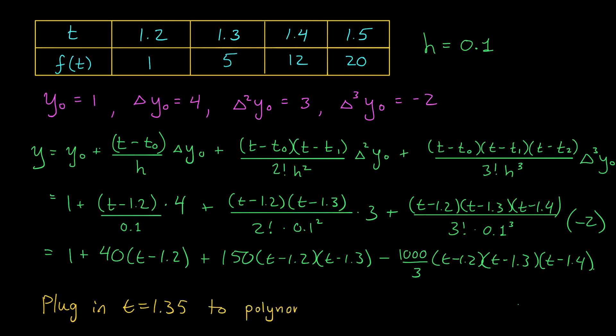What you're going to get in the end, and a computer is definitely going to be needed for this one, is 8.25 meters per second. And there you have it. The approximation of the hedgehog's speed at t equals 1.35 seconds.